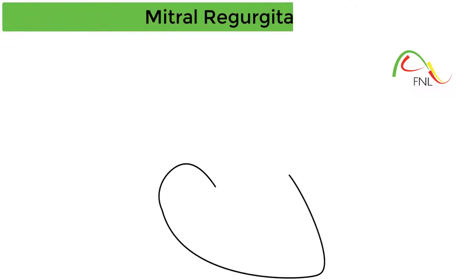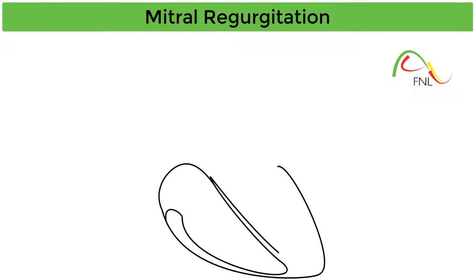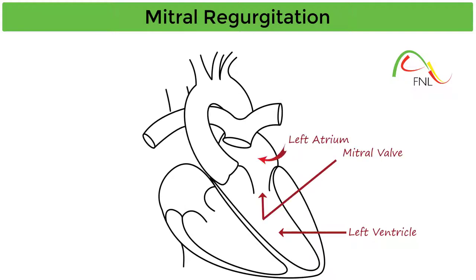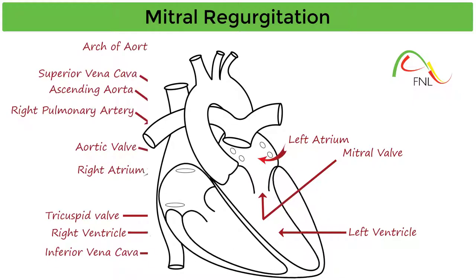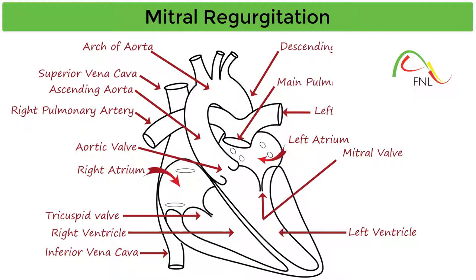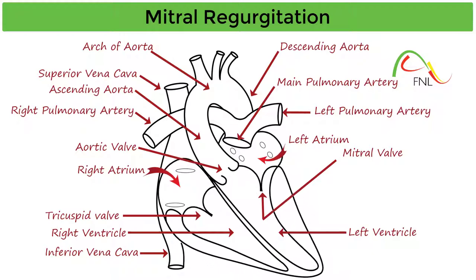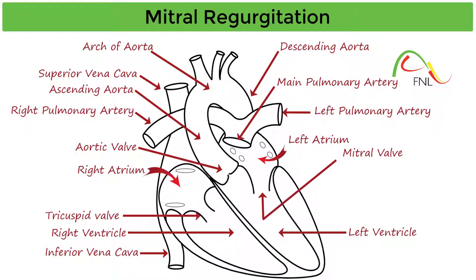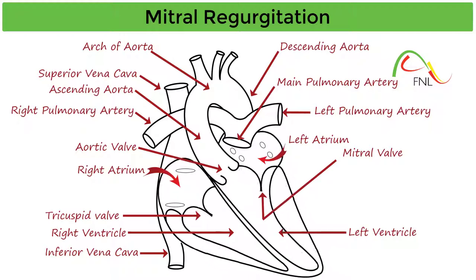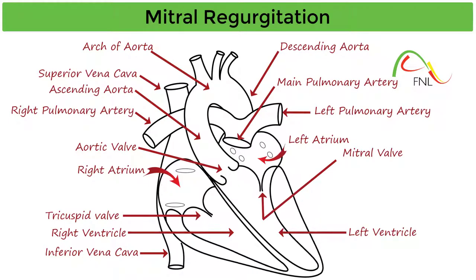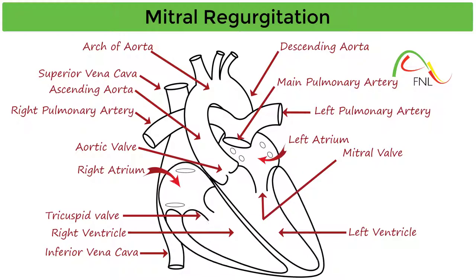Mitral regurgitation refers to reverse flow of blood from the left ventricle back into the left atrium via the mitral valve during systole. In healthy individuals, the mitral valve allows one-way flow of blood from the left atrium to the left ventricle. The mitral valve should be closed during systole, which only allows blood to flow from the left ventricle to the aorta. The term systole refers to a phase of the cardiac cycle in which ventricular contraction and atrial relaxation occur, and regurgitation simply refers to blood or fluid moving backwards.